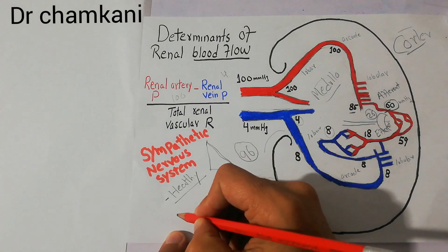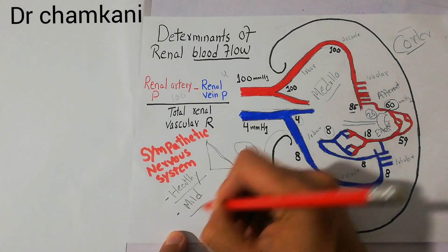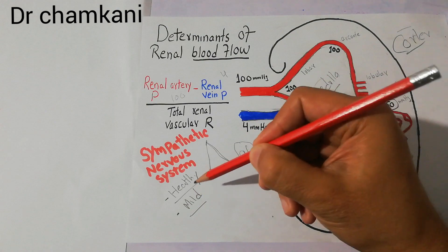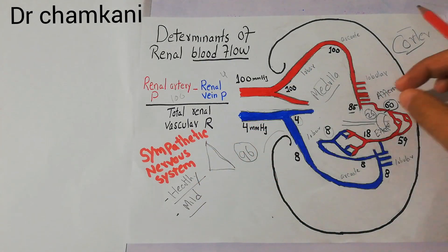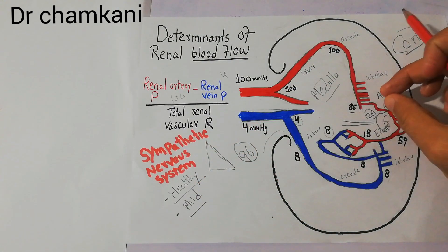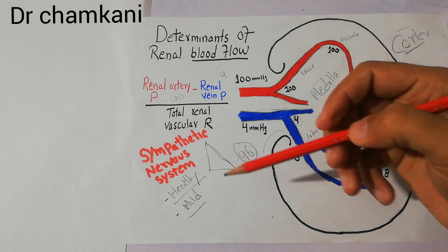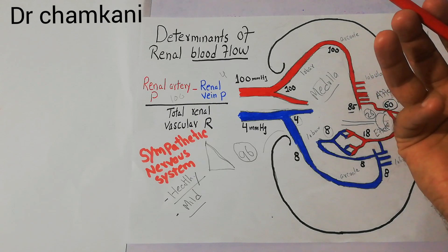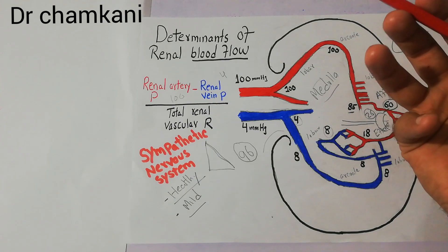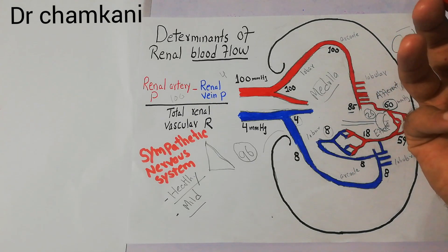In mild activation of the sympathetics, there may be a slight increase in the constriction of the vasculature, especially the afferent or the efferent arterioles. Mild activation may occur due to a slight drop in blood pressure or due to activation of the baroreceptors or chemoreceptors.